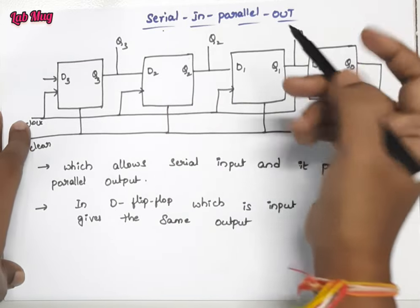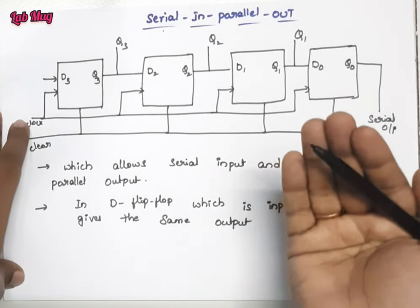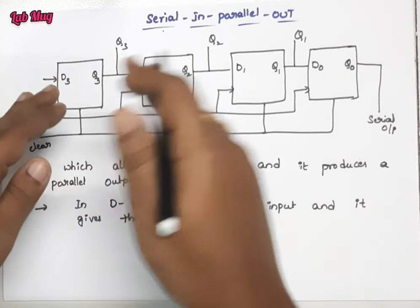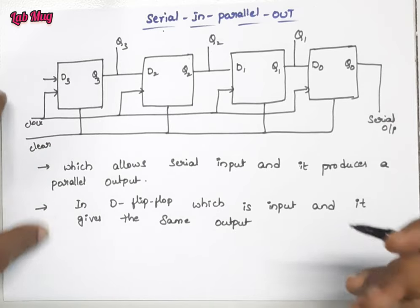And the parallel output, so each and every flip-flop will have a continuous output that we pass separately in parallel. We get the output like that.